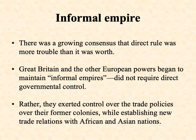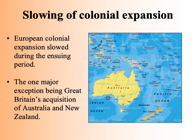With informal empire, you don't have to directly control territories to get what you want from them. A better approach would be to think carefully about what you actually want from the colonies — usually first and foremost raw materials and markets — and then if you can exert control over trade policies or have some measure of influence regarding their economic policies, that is a much more efficient way to get what you want. This defines how Great Britain deals not just with their former colonies in North America, but with much of Latin America and new trade relations in Africa and Asia. This period, the first half of the 19th century, will see a slowing down in colonial expansion — the biggest exception being when Great Britain acquires Australia and New Zealand.